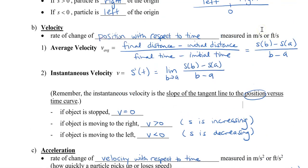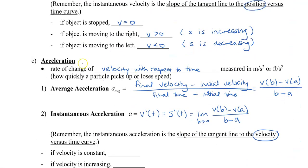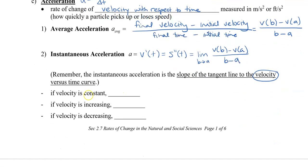Just to summarize: velocity is the change in position divided by the change in time, whereas acceleration is the change in velocity divided by the change in time. On the graph, if the velocity is constant, the acceleration is zero. If the velocity is increasing, our acceleration is going to be greater than zero. And if the velocity is decreasing, our acceleration is going to be less than zero, meaning it is negative.